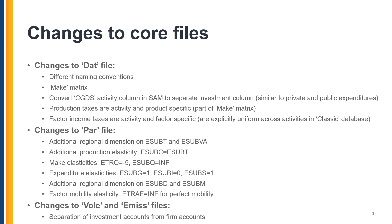The second change has been the inclusion of a make matrix, which allows us to differentiate activities from the commodities they produce. The third change is that we've converted the CGDS activity — the formation of capital goods — and made a separate investment column, treating it the same way we treat private and public expenditures. We've made production taxes activity and product specific as part of the make module, and we've converted factor income taxes to be both activity and factor specific. In the classic database they were only factor specific, so uniform across activities.